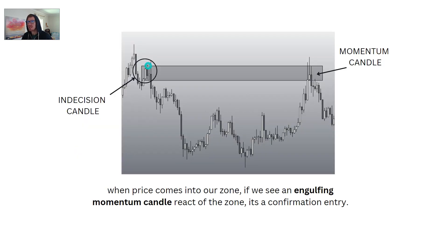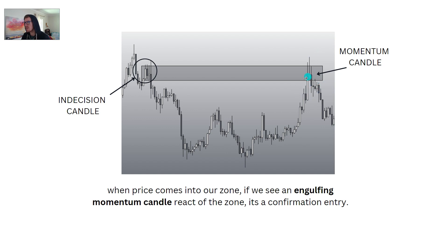Another example: price breaks structure with momentum candles — massive momentum down, changing character, breaking structure. We mark out the indecision zone, and this becomes our point of interest. When price comes back into our zone, we see an engulfing momentum candle react off the zone — it's the confirmation entry. Price taps in — we don't enter right away, we wait for the confirmation. We see a massive bearish engulfing candle. We can enter right underneath the candle with the stop loss above the highest wick, and there's another indecision candle left which could be a second confirmation.